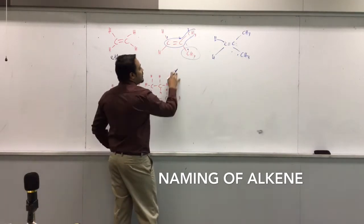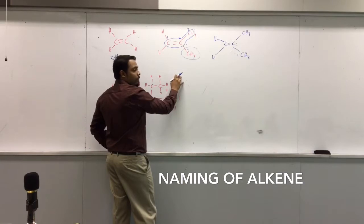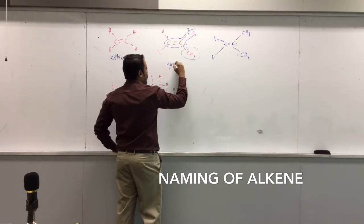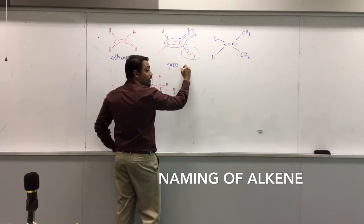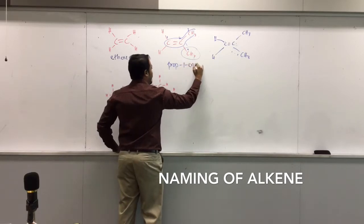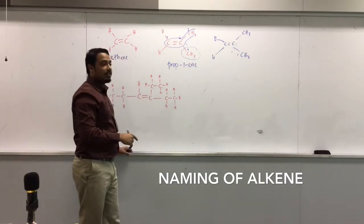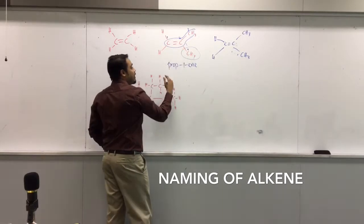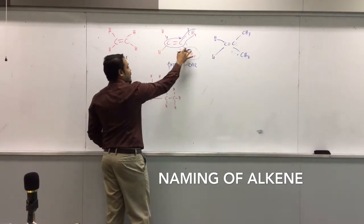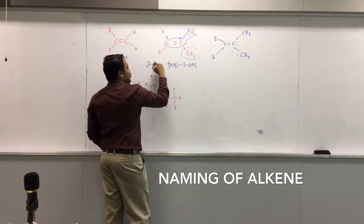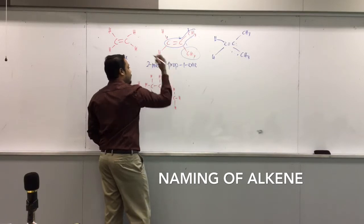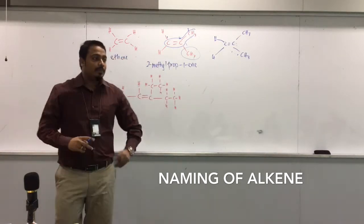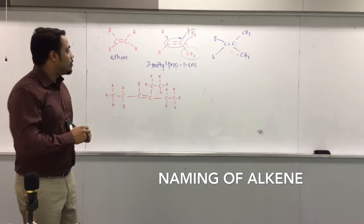What is this? So this is, the longest chain is three. So that's a prop. That's a prop one E. And what would be the side chain? Methyl at carbon number two. All right? So at carbon number two, that will be two methyl prop one E.